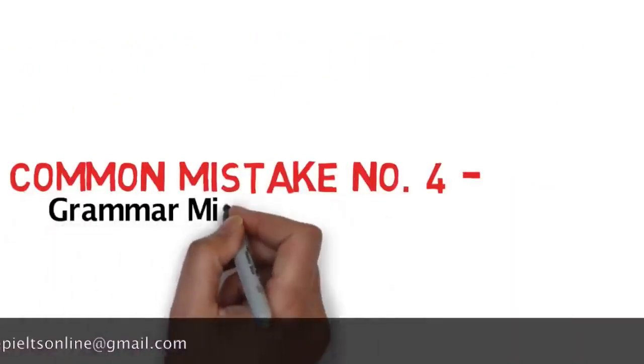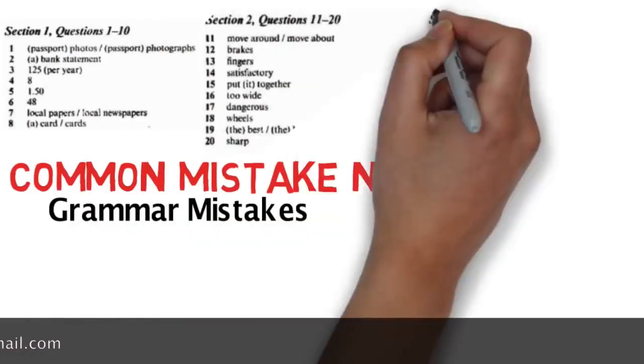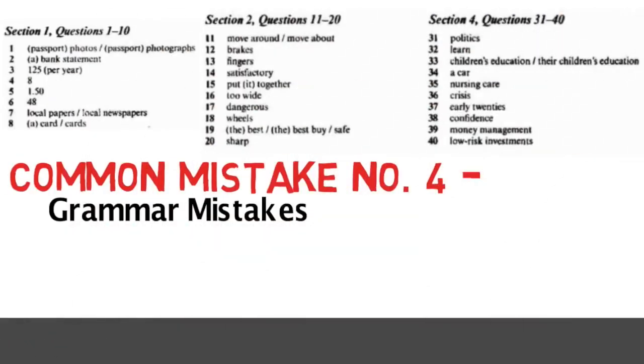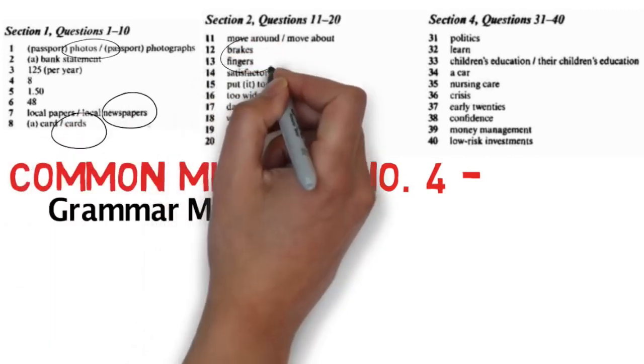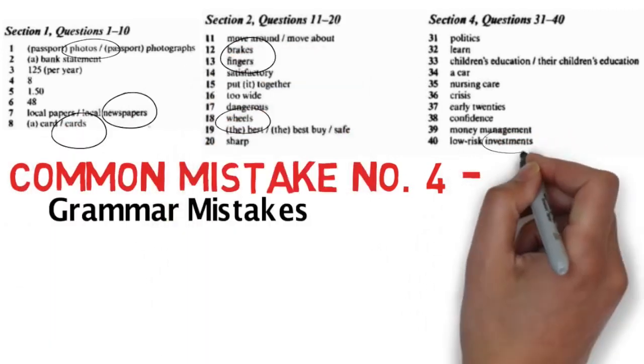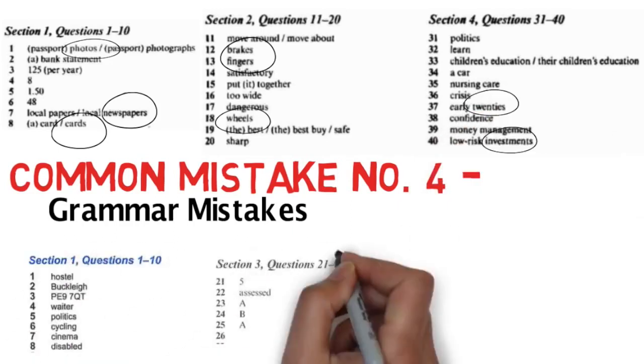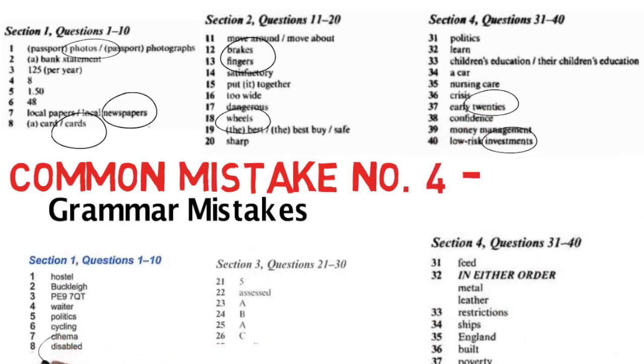Now, IELTS gives you some questions with answers ending in S and ES. This means they expect you to give a plural word in answer. However, if you miss that S or ES, your answer will be marked wrong. Similarly, paying attention towards present, past or future tense and keeping it the same as that of the speaker in audio also makes your answers correct.